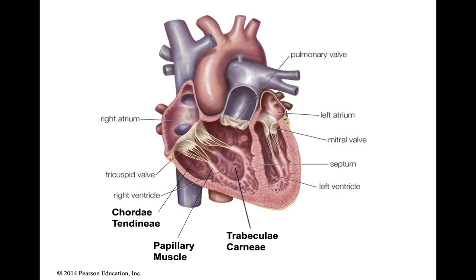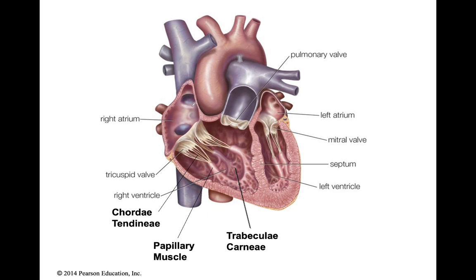Anatomically, you have the right side of the heart and the left side of the heart. You're always naming left and right based on if you were the person whose heart this was — if it was on your own body. In a human, you have a superior vena cava and an inferior vena cava. They bring blood into the right atrium.